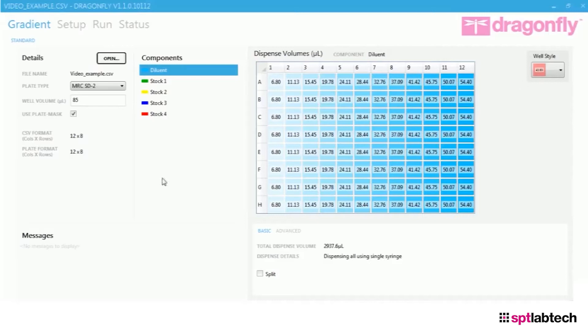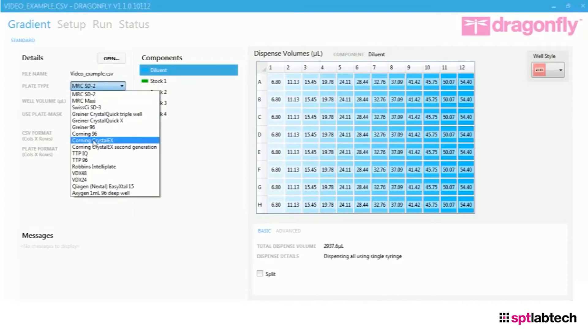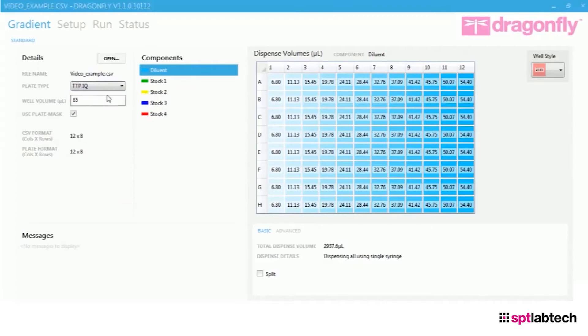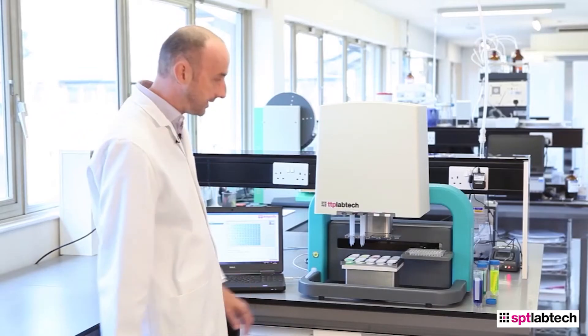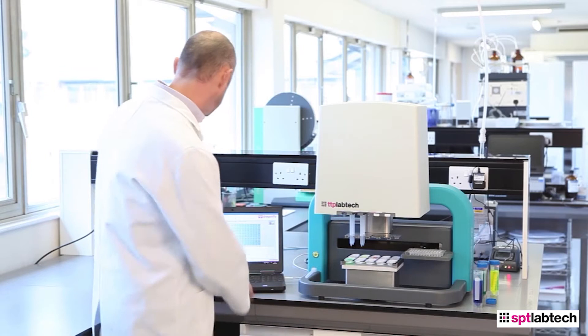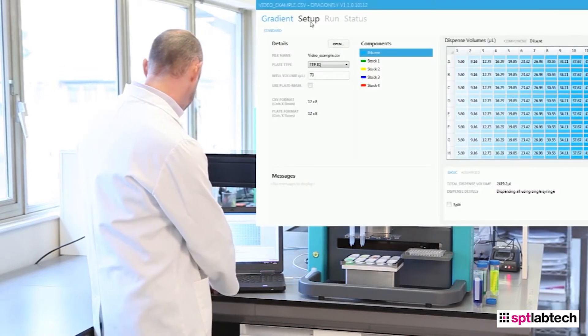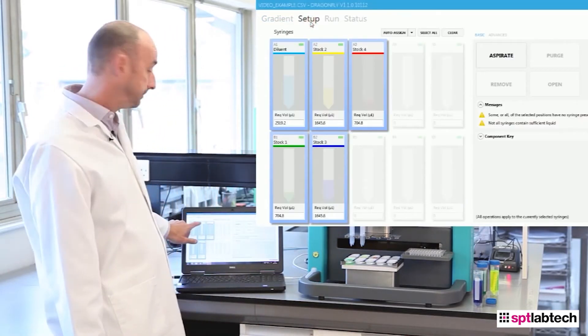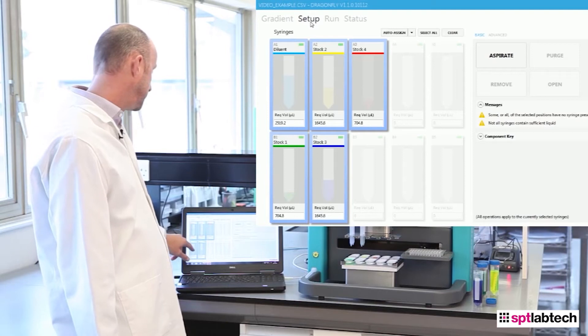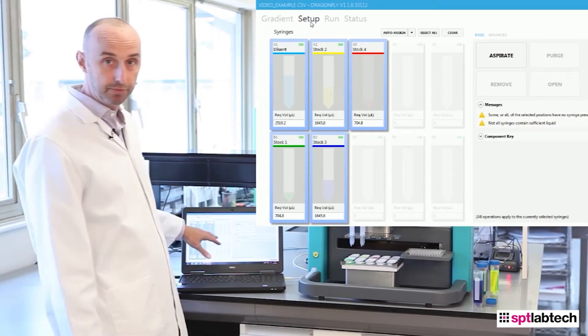We then have to select the correct plate type from the list. In this case, TTP IQ, and also a dispense volume. Once we've done that, we have a plate on the machine. We then go to setup at the top. This shows us what tips are required and also which volumes of stock we need to place on the reagent trays.